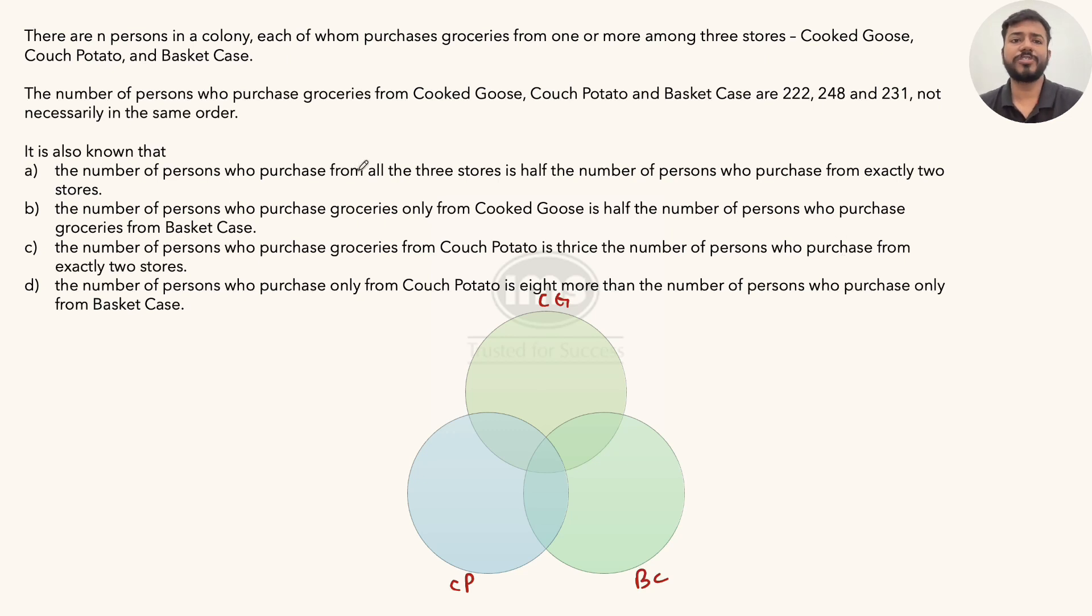So there are three sets basically. Let's represent the first one by CG, Cooked Goose. The other is Couch Potato and the third one is Basket Case. This is very important that everything lies within the sets because it was clearly mentioned that each of whom purchases groceries from one or more among the three stores. So none wala part is zero. Outside there is nothing.